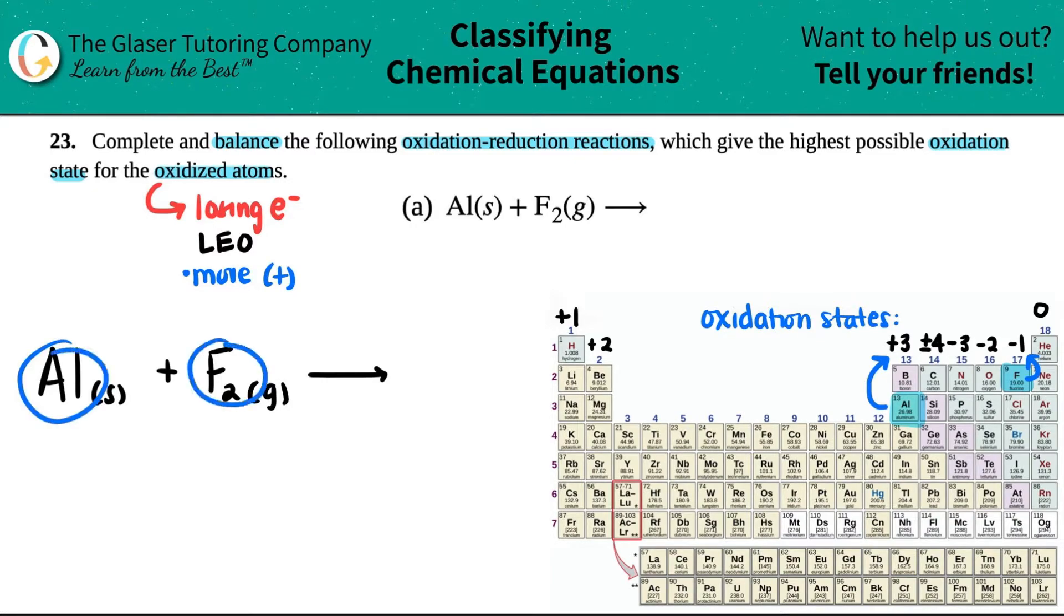Now, what are the charges when these atoms exist by themselves? We know this. If you have an atom by itself, either as a single element or a diatomic, all of the states are zero. So aluminum has a zero charge and fluorine has a zero charge.